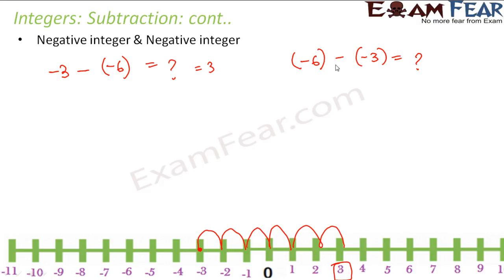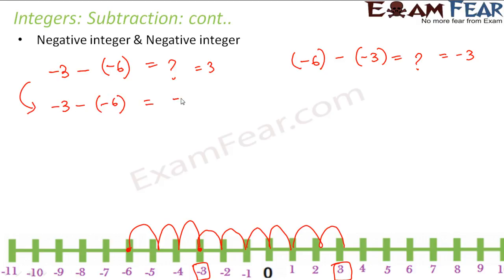In the other case, it is minus 6 minus minus 3. So you are at minus 6 and now you are removing a negative number, so again you move towards right — 3 steps. So you arrive at minus 3, and the result would be minus 3. Another way of looking at it: minus 3 minus minus 6 means adding the additive inverse of minus 6, which is plus 6. So minus 3 plus 6 would be plus 3. Similarly, minus 6 plus the additive inverse of minus 3, which is plus 3, gives minus 3. You arrive at the same results.